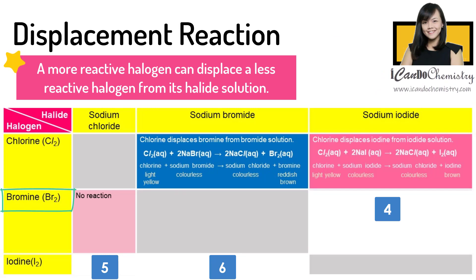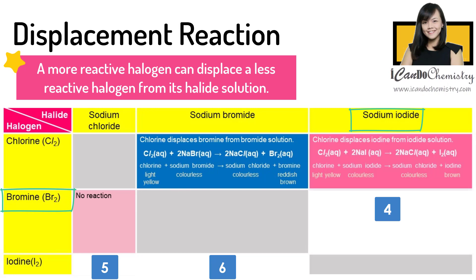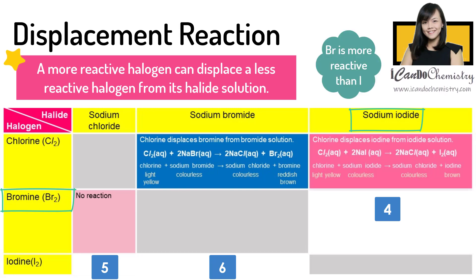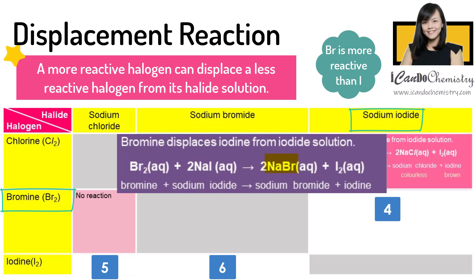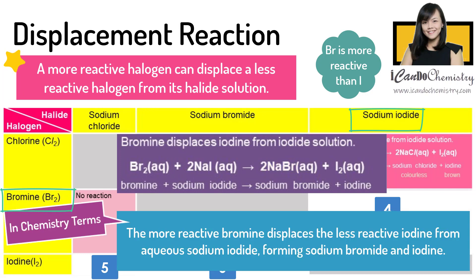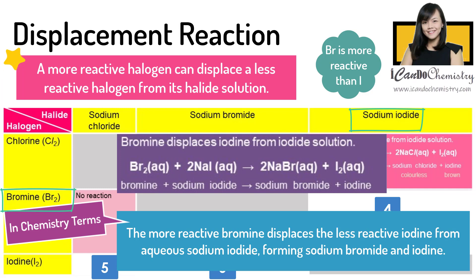Scenario four: aqueous bromine added to iodide solution. Again, reactivity of halogens decreases down the group. Bromine is more reactive than iodine, hence bromine will be able to displace iodine from iodide solution. So bromine will take the place of iodine, forming sodium bromide. Hence we can say, the more reactive bromine displaces the less reactive iodine from aqueous sodium iodide, forming sodium bromide and iodine.